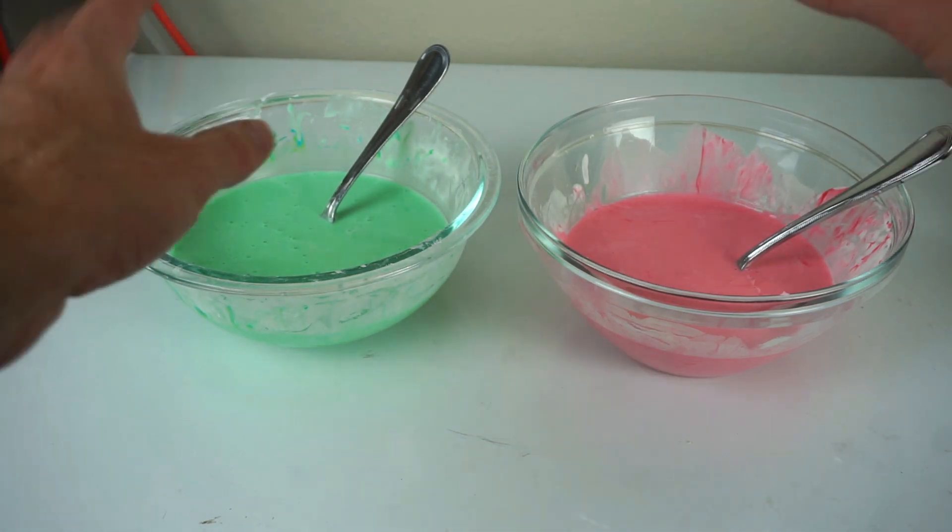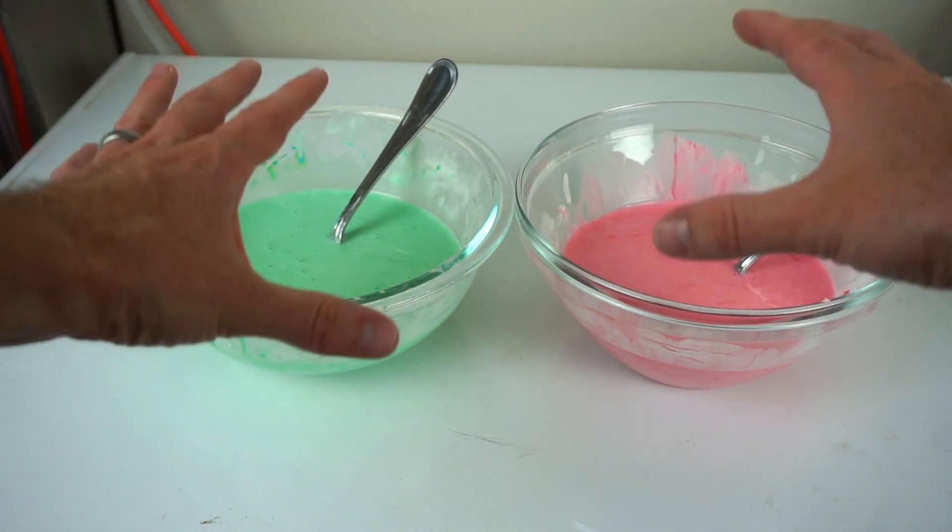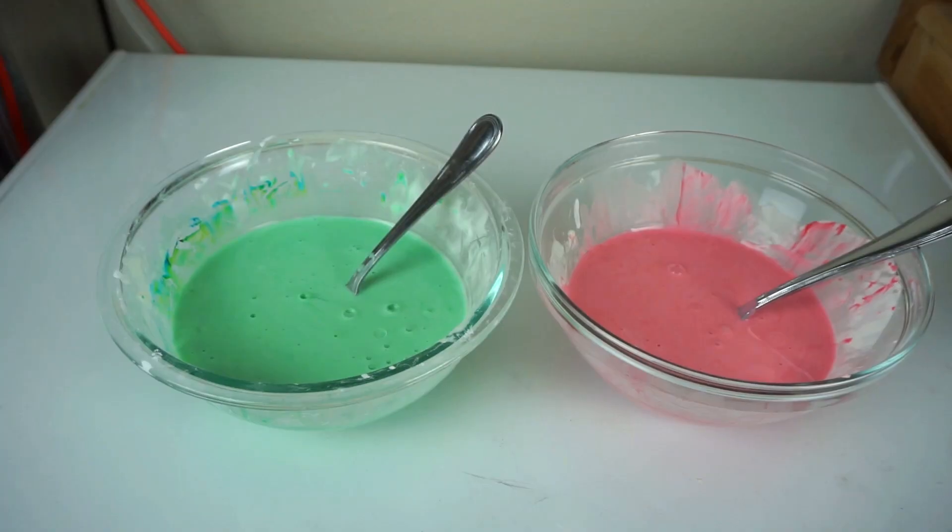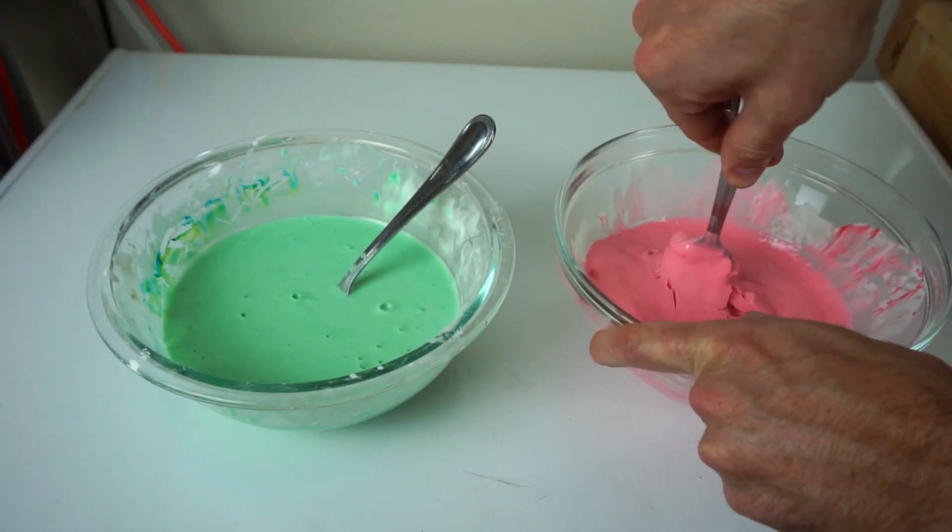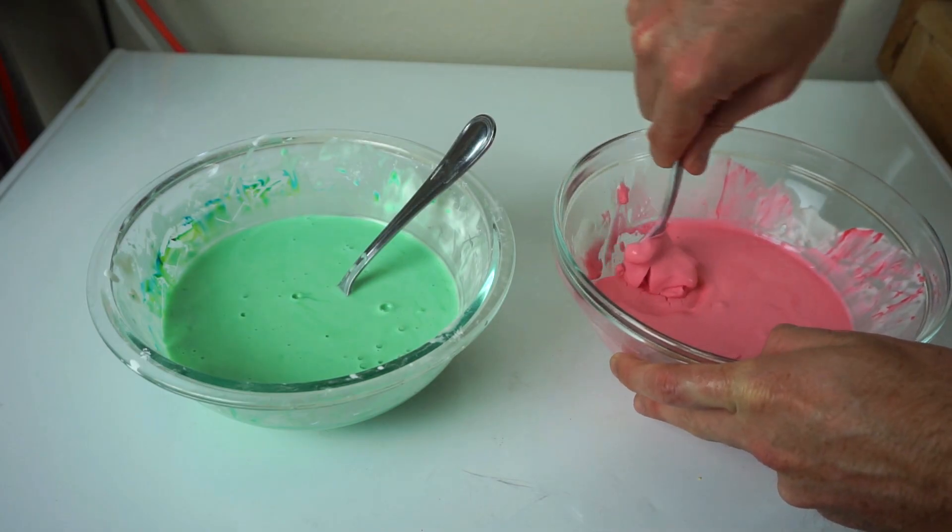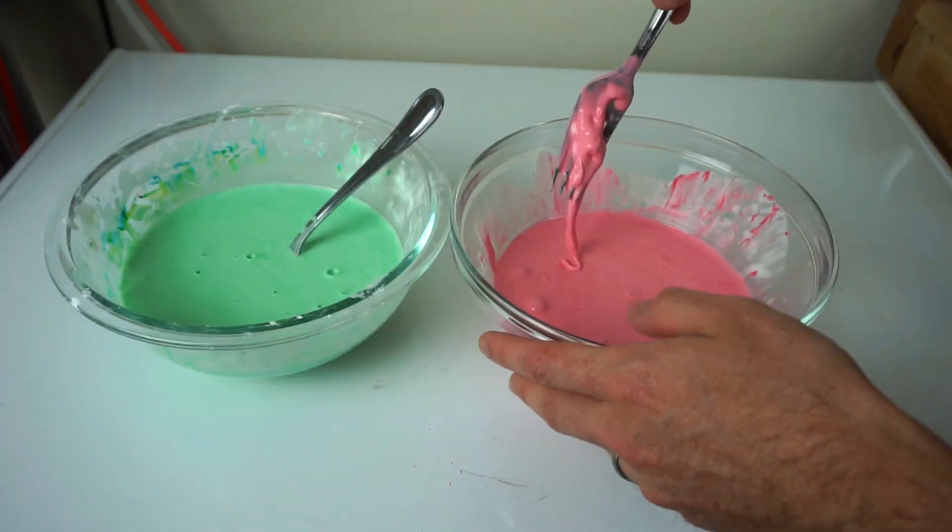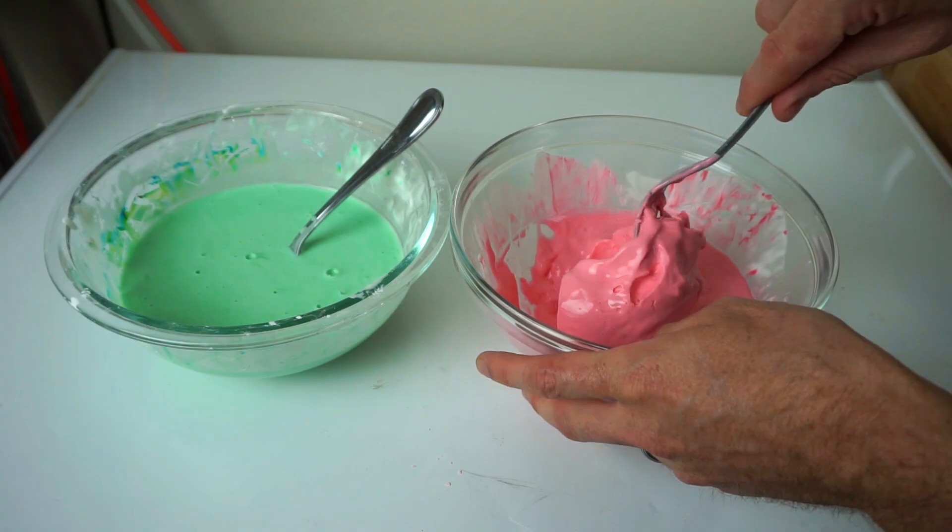Okay, today I'm going to be seeing if I can mix two different colors of Oobleck in a paint shaker. The reason this test should be interesting is because Oobleck changes viscosity depending on how hard you're moving it. So that means its viscosity is dependent on its shear rate.